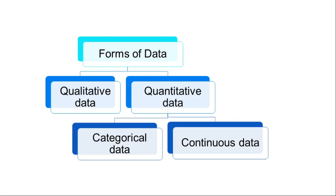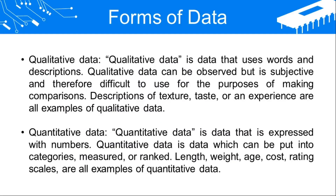The forms of data are: first, qualitative and quantitative; and under quantitative, categorical and continuous. Qualitative data is data that uses words and descriptions. Quantifiable data is quantitative, while qualitative data uses descriptions and sentences and is not quantifiable.